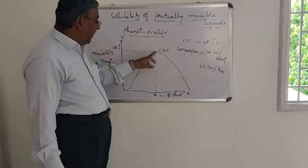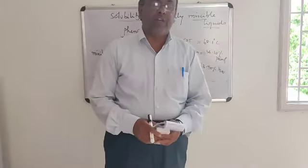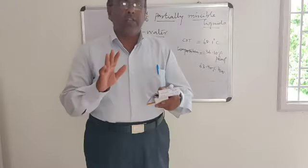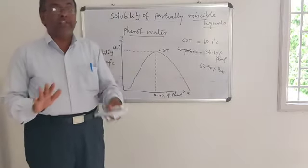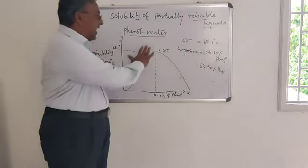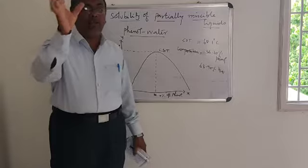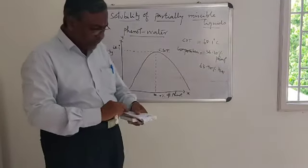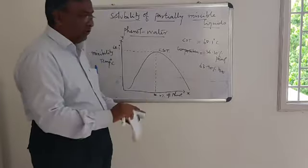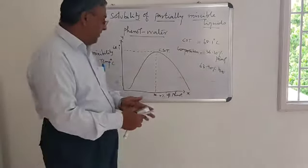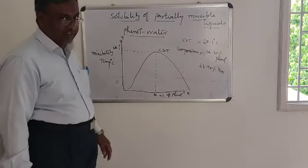Above 68.1°C, whatever the composition of phenol and water, all compositions are completely miscible with each other. They act as a single phase — homogeneous, clear liquid. This is called the critical solution temperature, as explained for the phenol-water system.